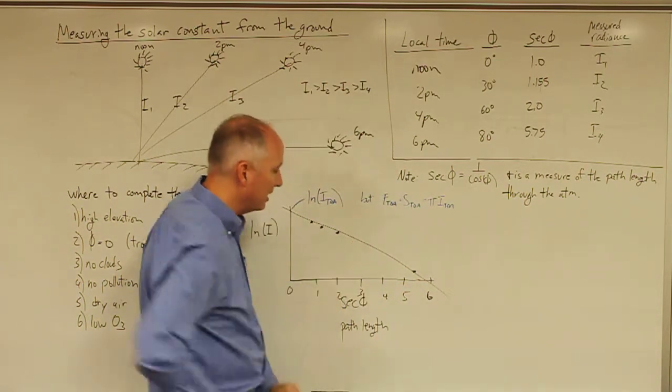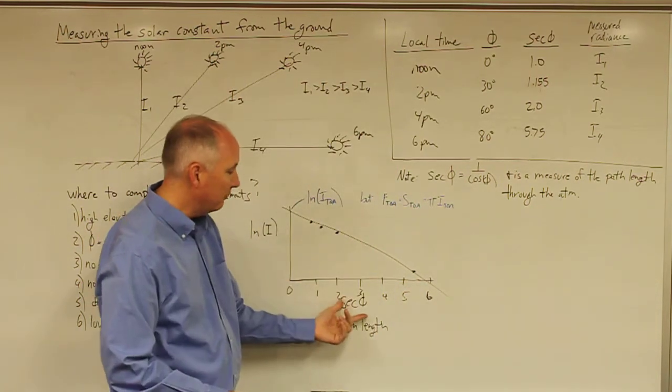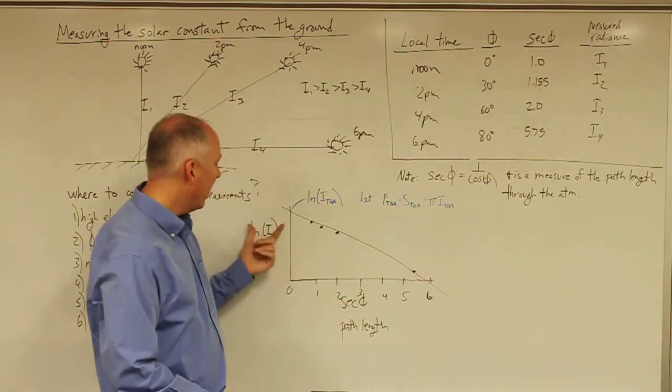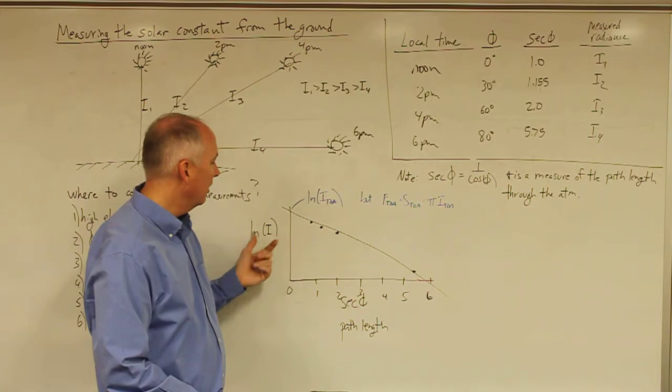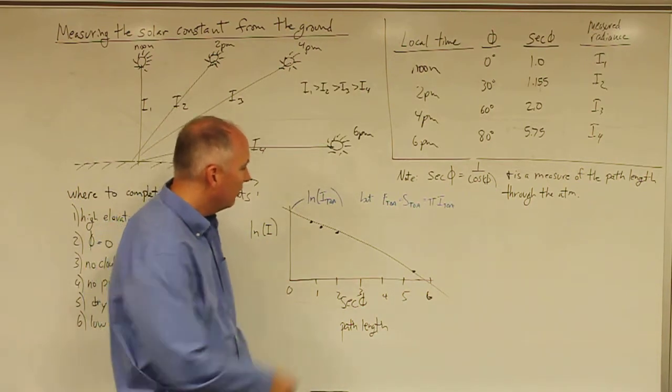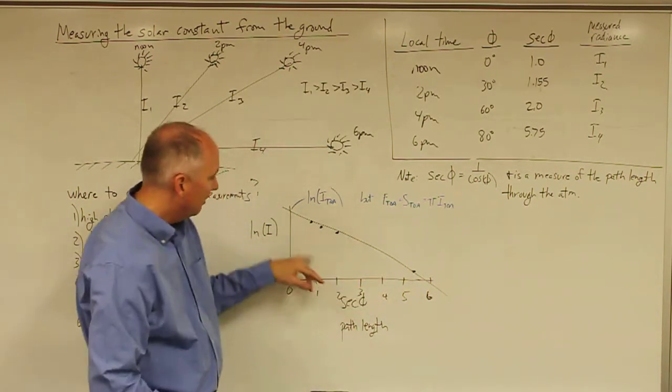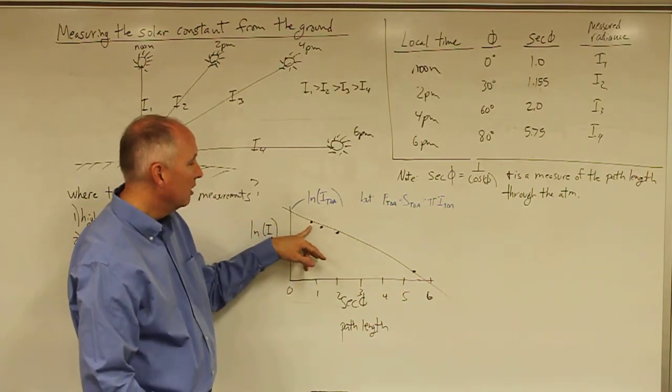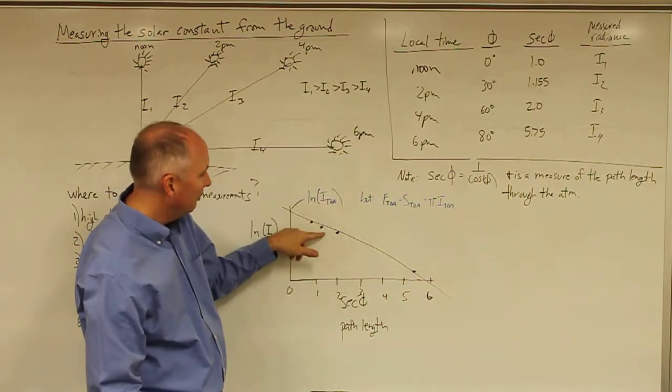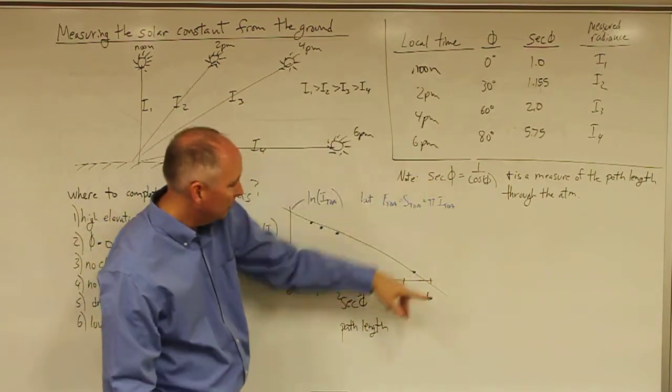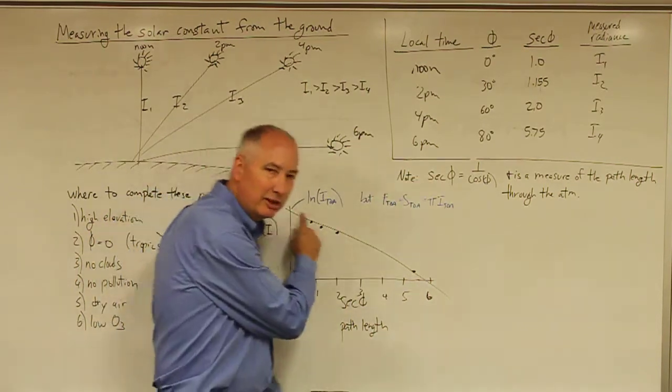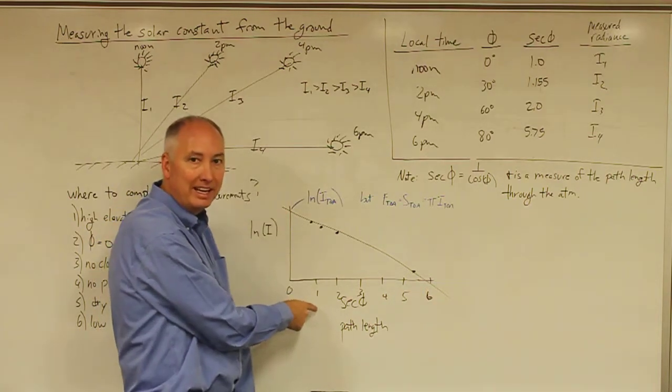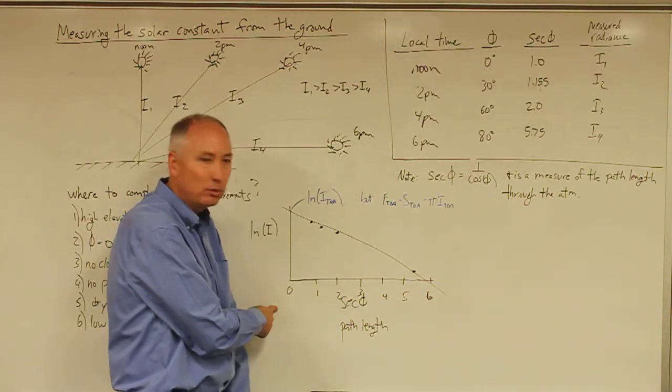And if we plot that data up as a function of secant of phi, which is a measure of the path length, and the natural log of the radiance, then we have these data points at a path length of one, essentially secant of phi. We get that point 1.15 here, 2 there, and 5.75 out here. You can actually fit a straight line to this and calculate the intercept for extrapolating to a path length of zero.